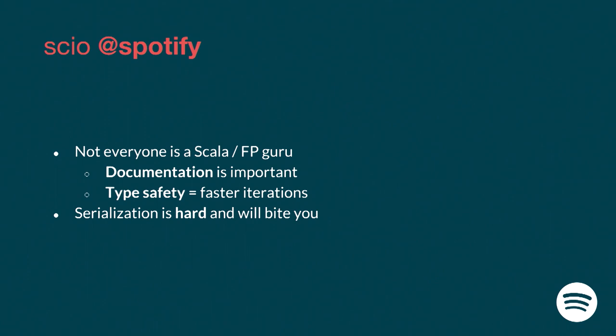That means two things for us. The first is that documentation is important, because we have a lot of users but my squad is actually a small team — only four people working full-time on Scio. When someone uses Scio at Spotify, they should be able to do anything they need to by themselves. They shouldn't need our help. They should just read documentation and figure out everything themselves.